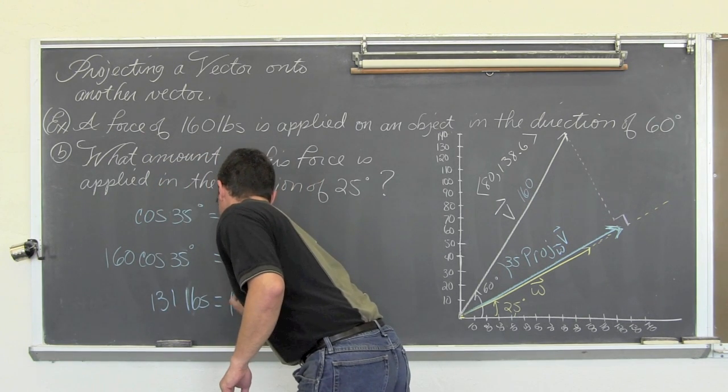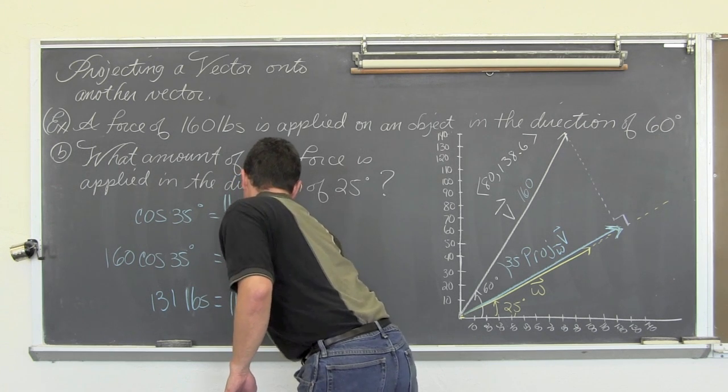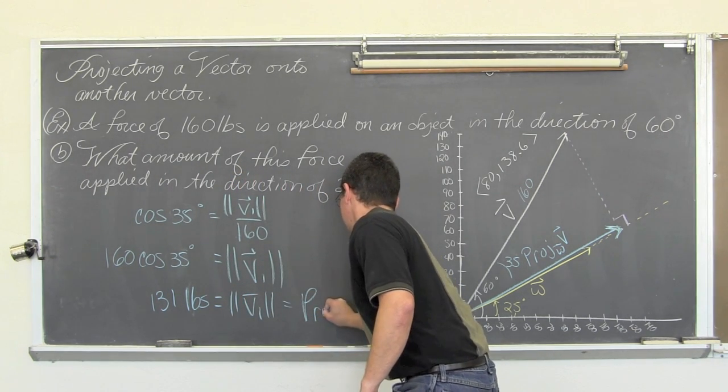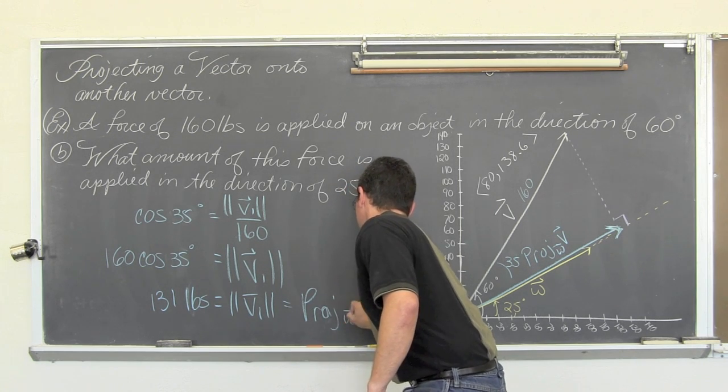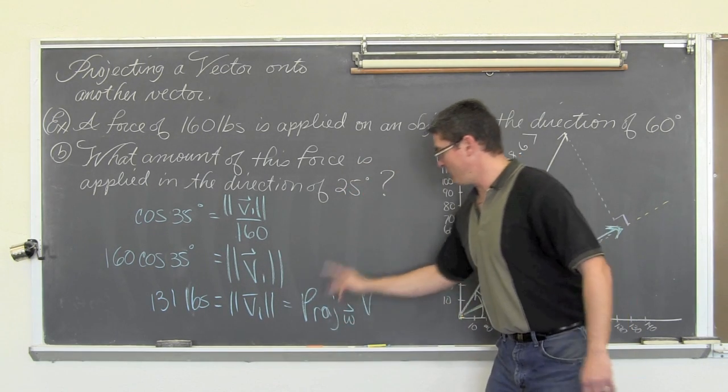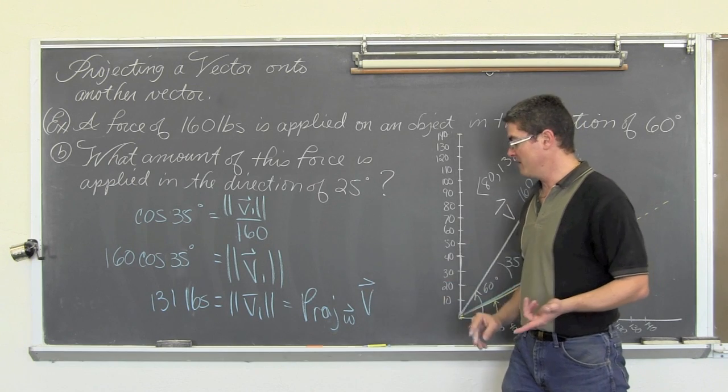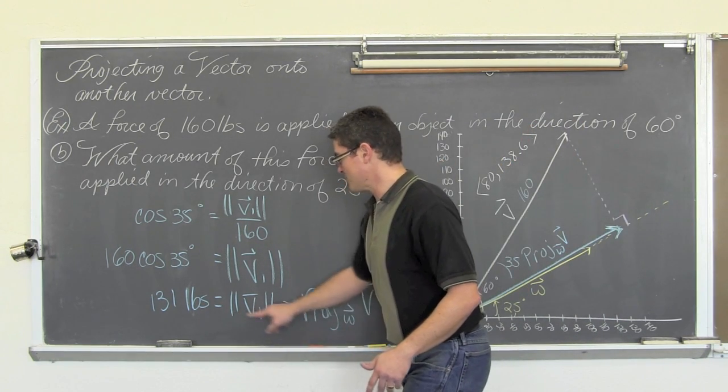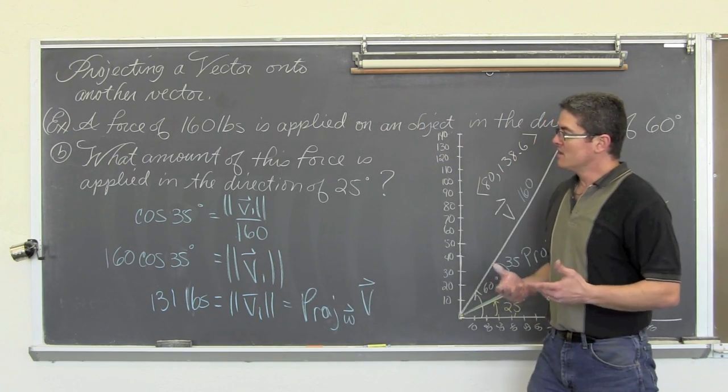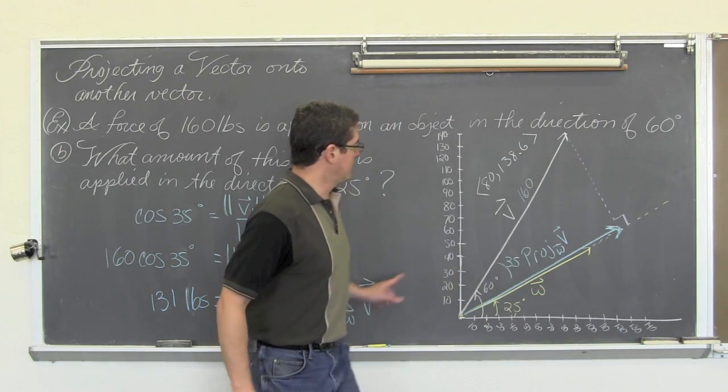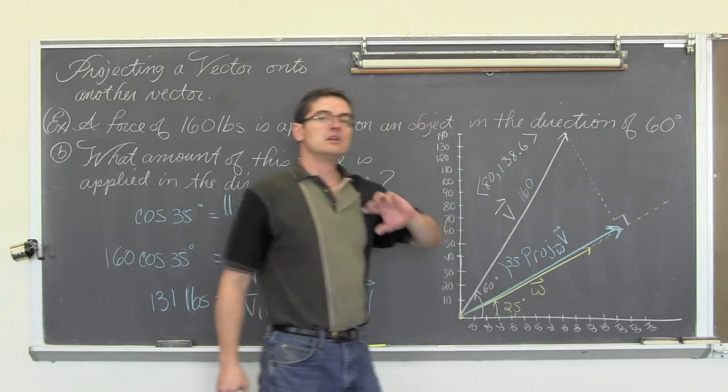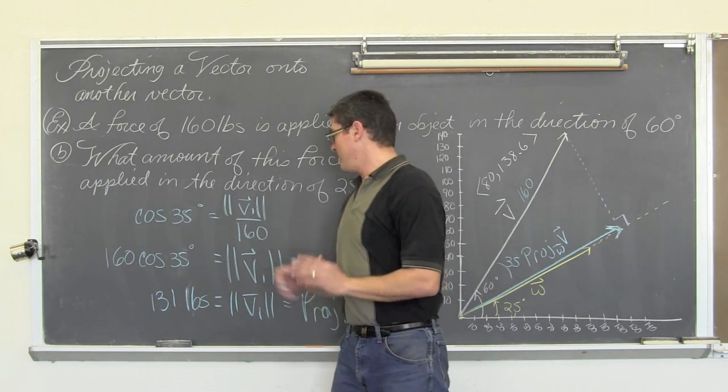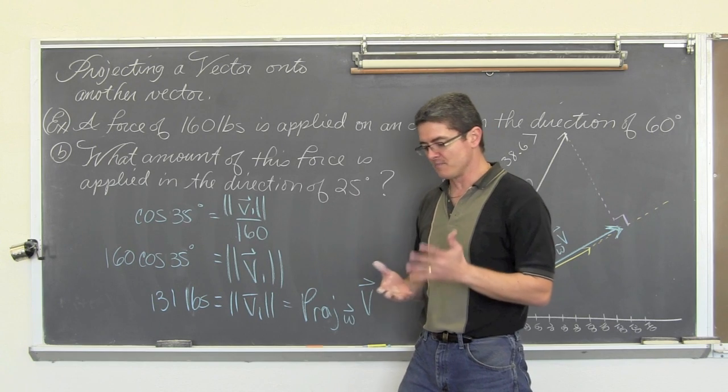So, the 160 times the cosine of 35 degrees is a hundred and thirty-one pounds. And that is the magnitude of our projected vector, or however you want to write it. That is the magnitude of the original vector v being projected in the direction of vector w. Or, as you will see in a second, I am going to have that re-labeled as v1. So, 160 pounds in the angle of 60 degrees translates into, if I care about the measurement going off at 25 degrees, ends up being 131 pounds.